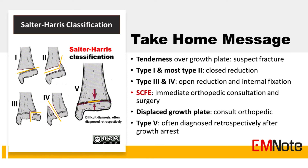Take-home message: Palpable tenderness at the growth plate level should be managed as a fracture, even if x-ray results are negative. Salter-Harris type 1 and most type 2 fractures are treated with closed reduction and cast or splint immobilization. Slipped capital femoral epiphysis is a severe form of type 1 fracture requiring immediate orthopedics consultation and surgical intervention. Any growth plate fracture displaying displacement should prompt consultation with a pediatric orthopedic specialist. Type 3 and 4 fractures typically affect the joint surface, necessitating open reduction and internal fixation. A type 5 fracture is often diagnosed retrospectively after the occurrence of growth arrest.